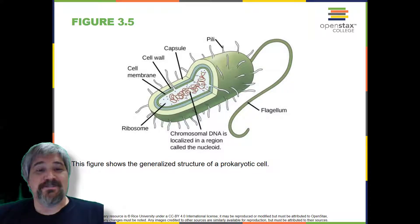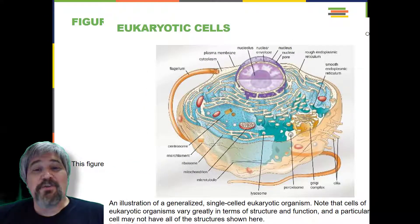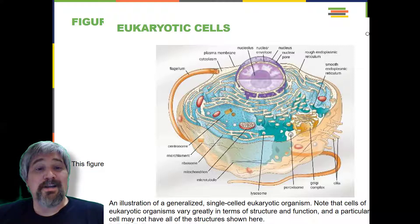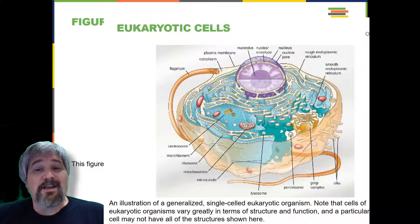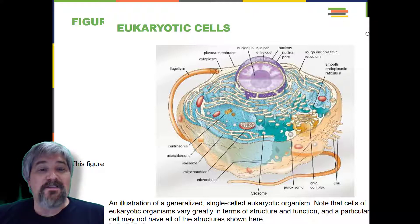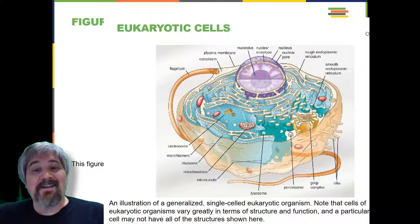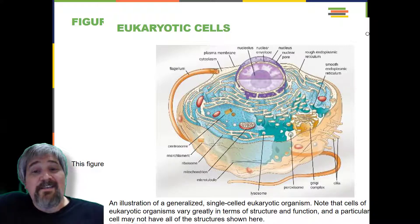A eukaryotic cell is a cell that has a membrane-bound nucleus and other membrane-bound components, or sacs, called organelles, which have specialized functions. The word eukaryotic means "true kernel" or "true nucleus," alluding to the presence of the membrane-bound nucleus in these cells. The word organelle means "little organ," and organelles have specialized cellular functions, just as the organs of your body have specialized functions.